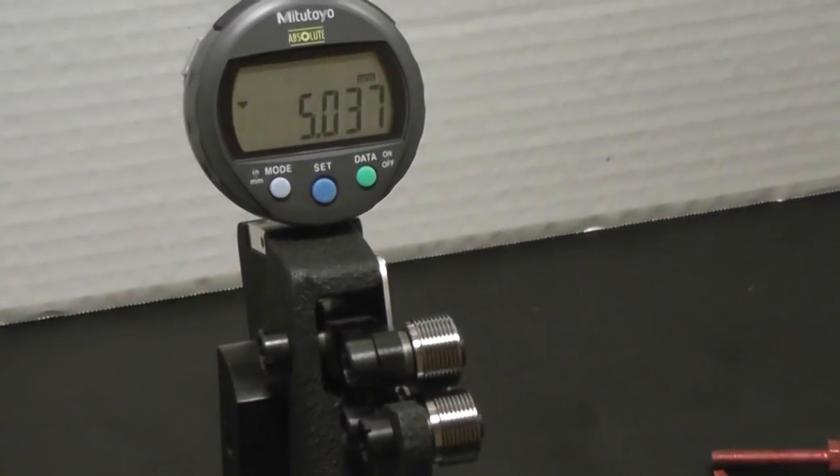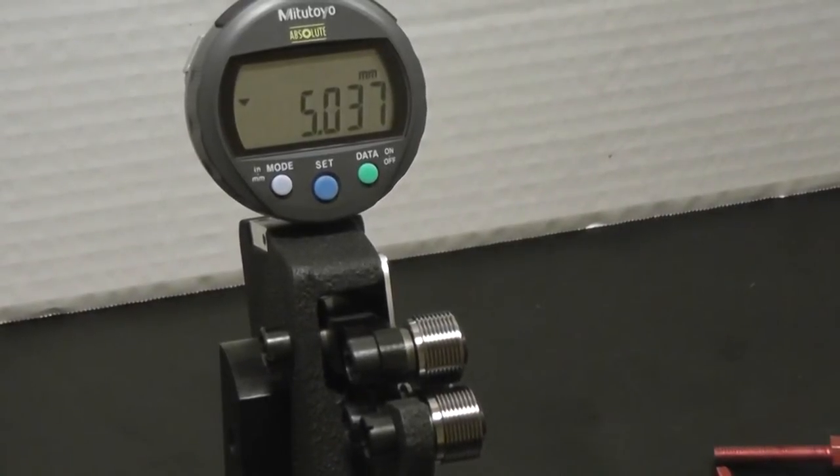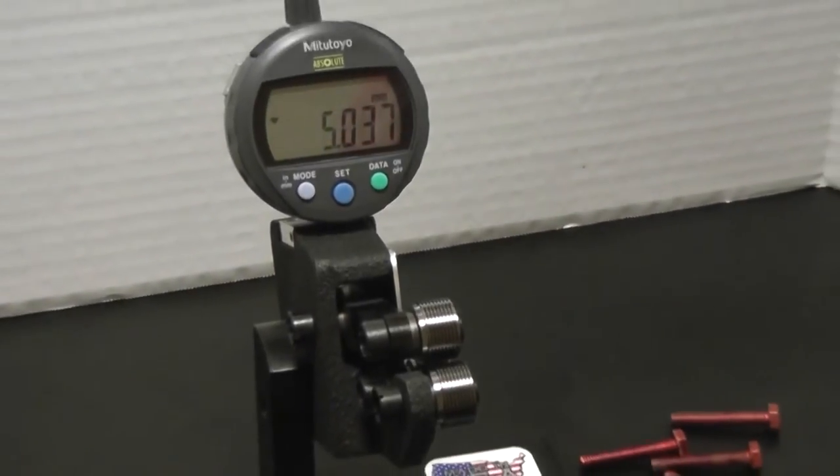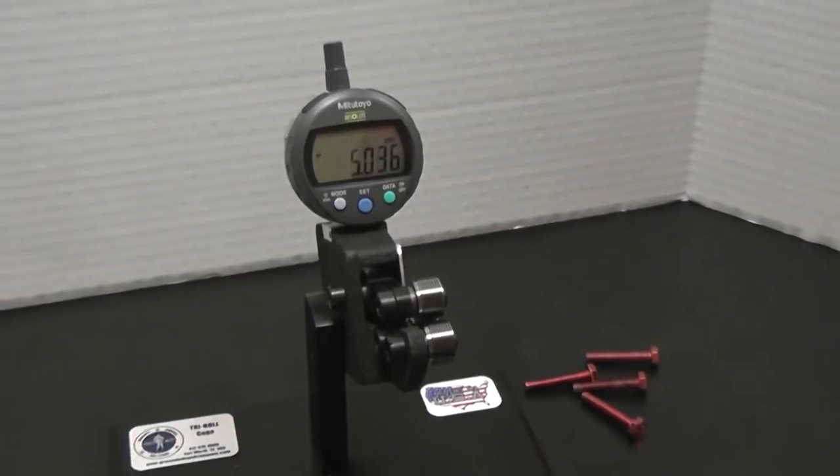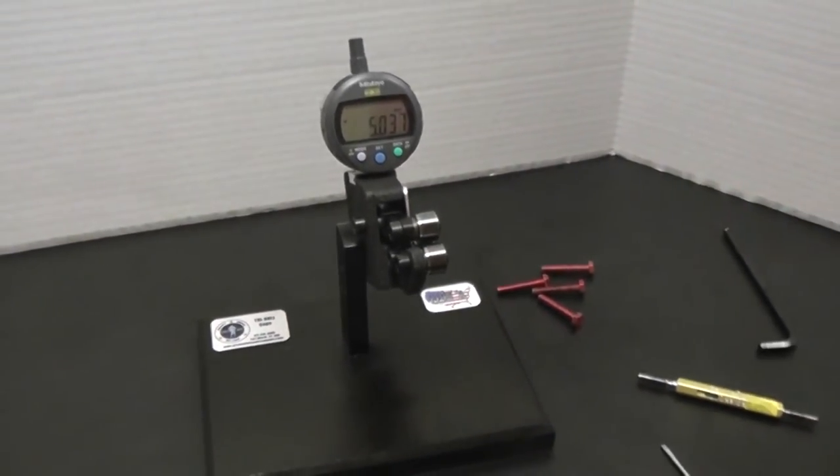As you can see, it sure beats ring gauging them up and down. First, the go, all the way up, and then the no-go. So it's a lot quicker. Nice thing, you got a data output. You can put that right to your computer if you wanted to. And that's how to check functional diameter for a tri-roll gauge. We're going to talk about the single element pitch diameter next.